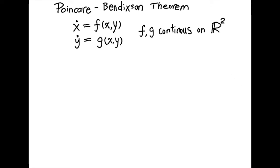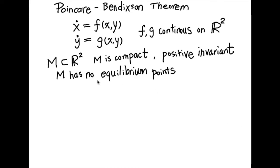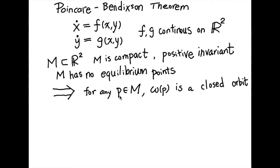In this video, I will talk about the Poincaré-Bendixson theorem. It's a theorem about first-order ordinary differential equations on the plane. Suppose x-dot is f of x,y and y-dot is g of x,y, where dot means d/dt. Here f and g are continuous functions on the plane, and M is a compact region on the plane. The system is positively invariant inside region M, and there's no equilibrium point in M. Then starting from any point p in M, the omega limit set of p is a closed orbit.